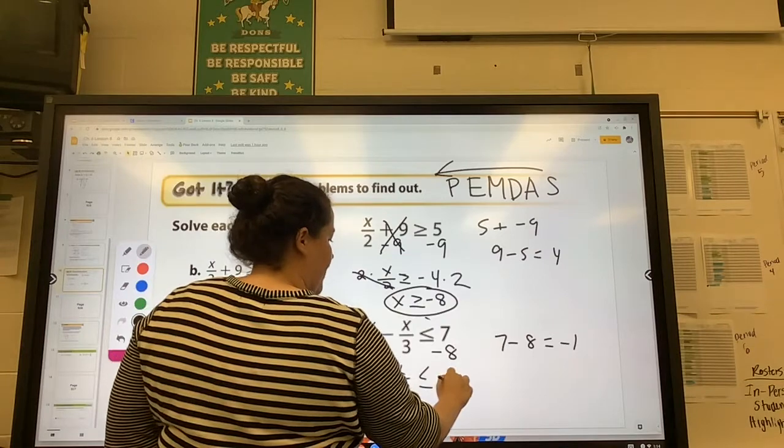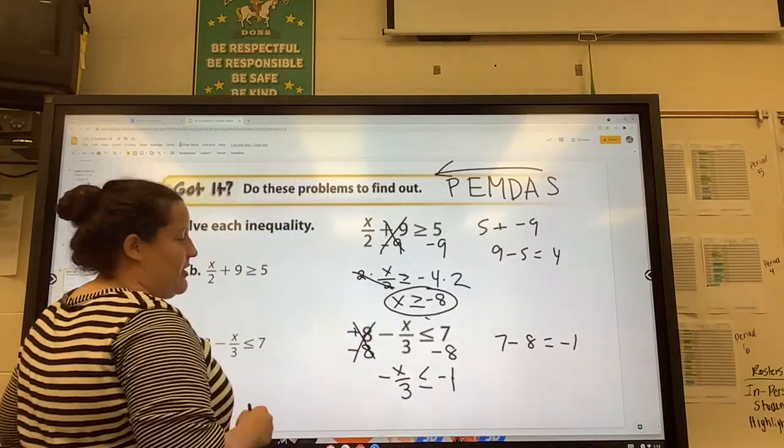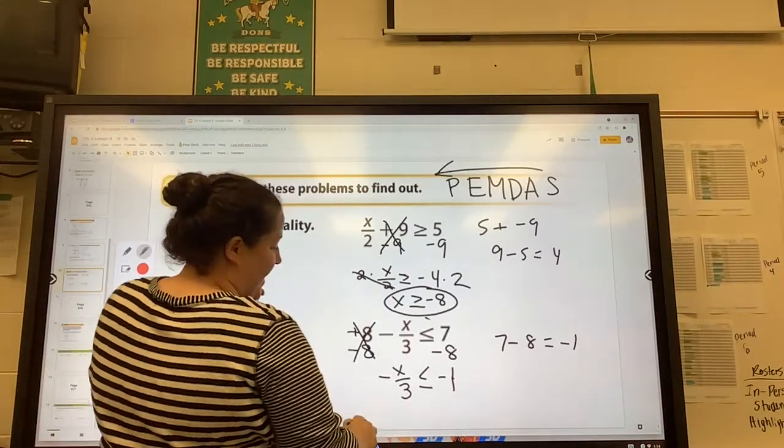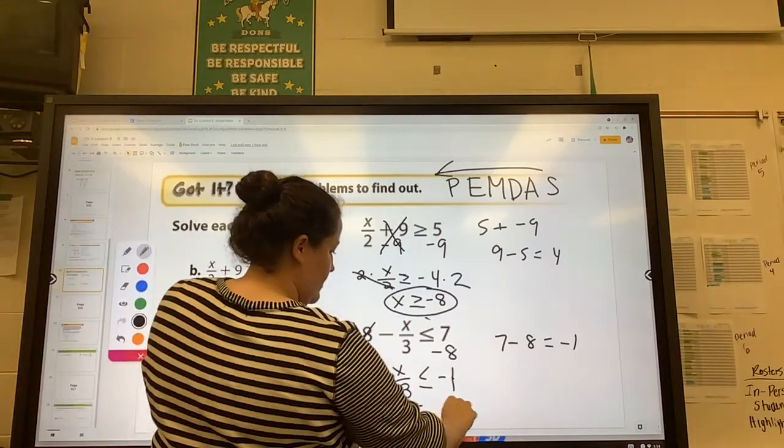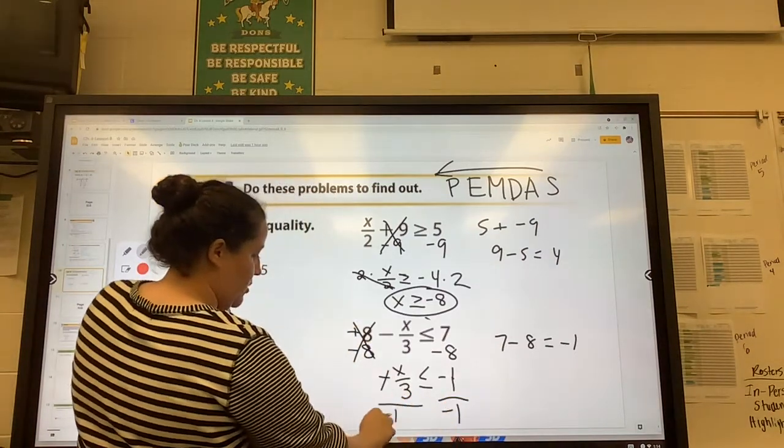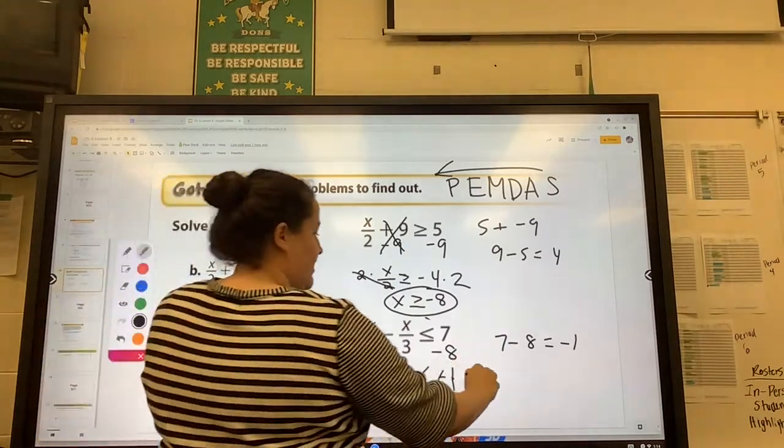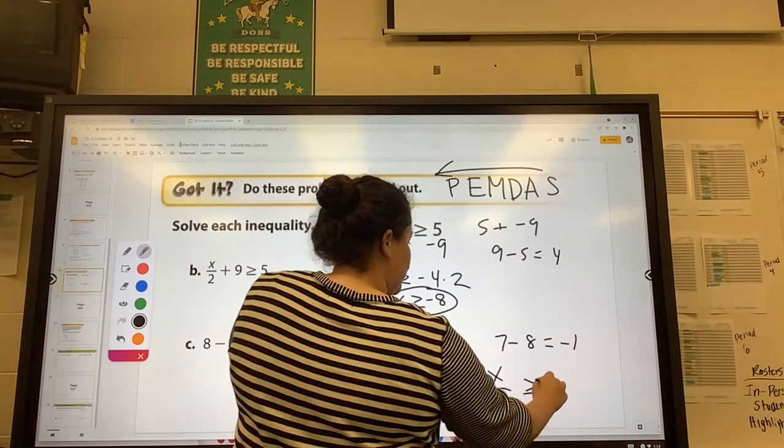We haven't done anything yet that would require us to change the sign. But now we're going to be doing something. So if we divide both sides by a negative 1, the whole thing, the negatives all cancel. And so we change the sign. So it's actually x over 3 is greater than or equal to 1.